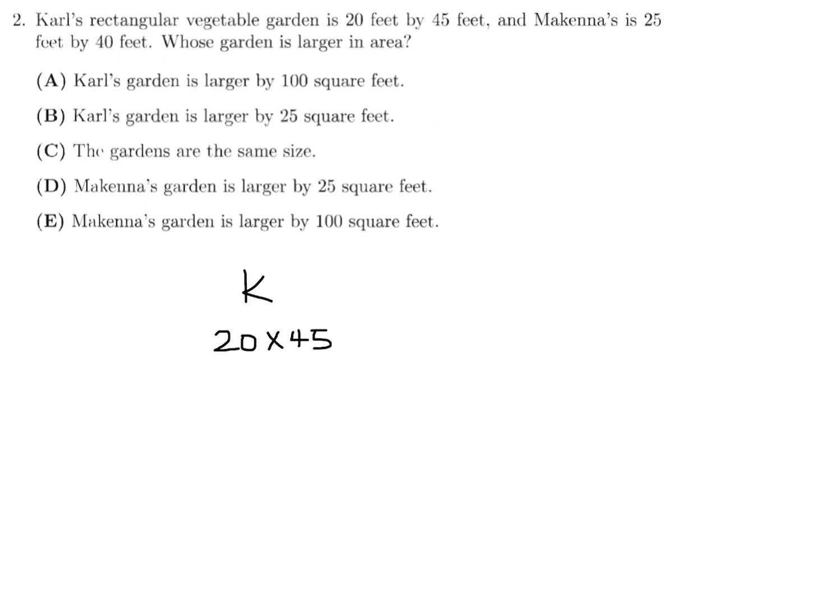So Carl's area is going to be 20 times 45, which is 900 square feet, and McKenna's area is going to be 25 times 40, which is a thousand square feet. So comparing these, obviously McKenna's is larger than Carl's by 100 feet. That is the difference. So the answer to number two would be E.